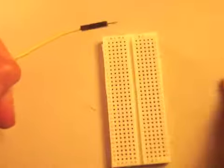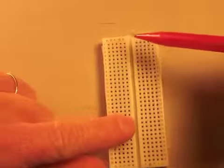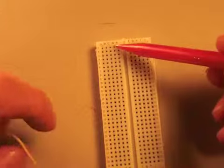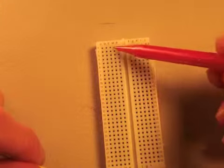And what's important to understand is that with the breadboard, the rows, these rows here, are connected on one side of this jump.